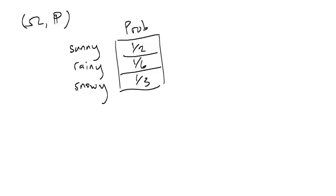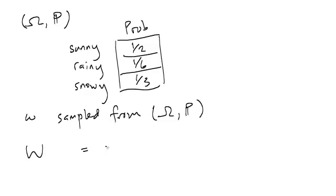You sampled from this probability space to get a random outcome, which mathematically we'll usually denote with little omega. So we had a little omega sampled from this probability space above. And then we had a random variable W, which is set equal to omega.